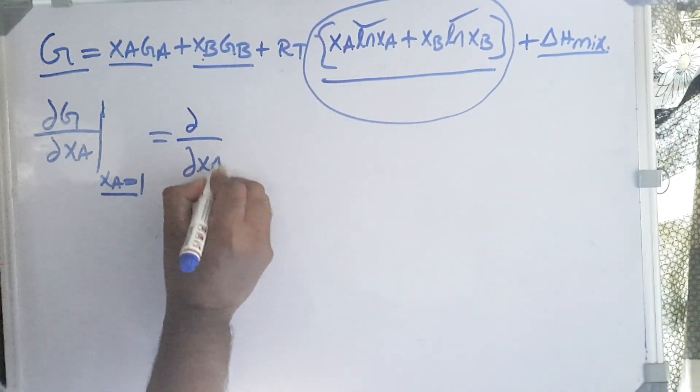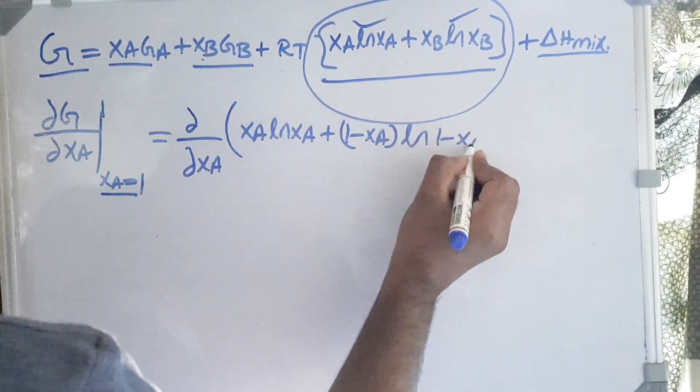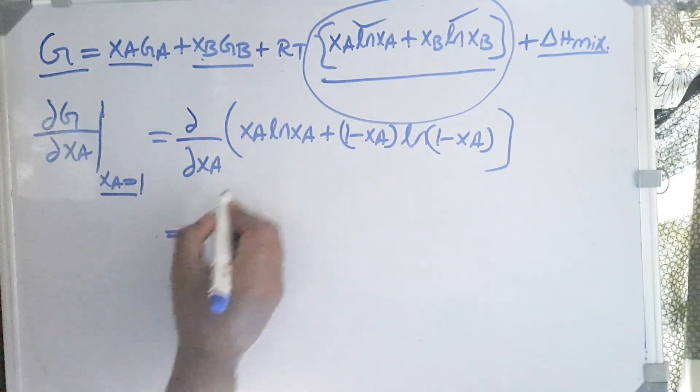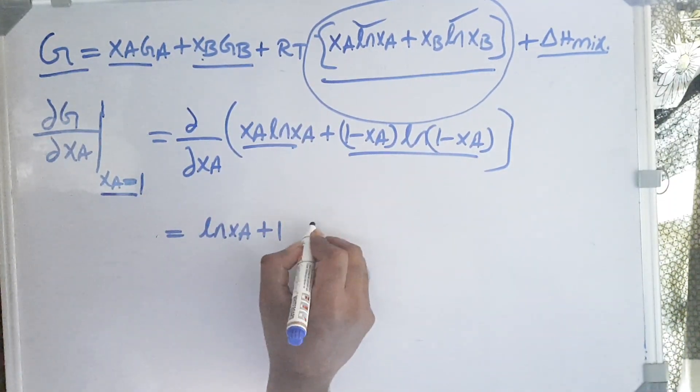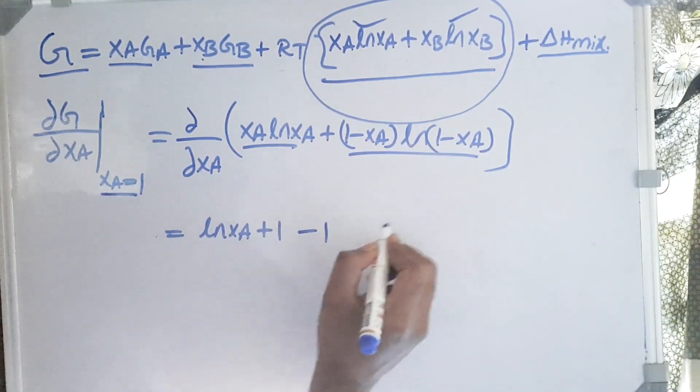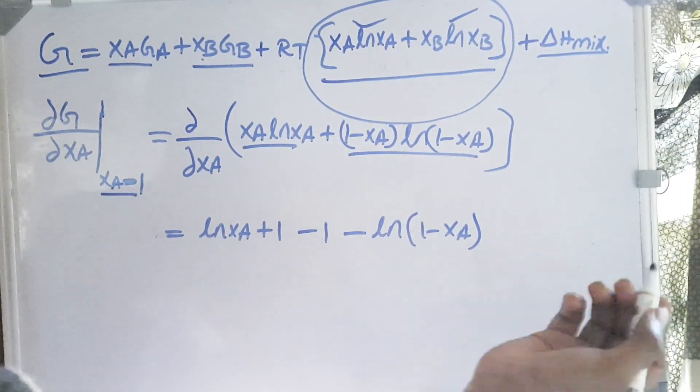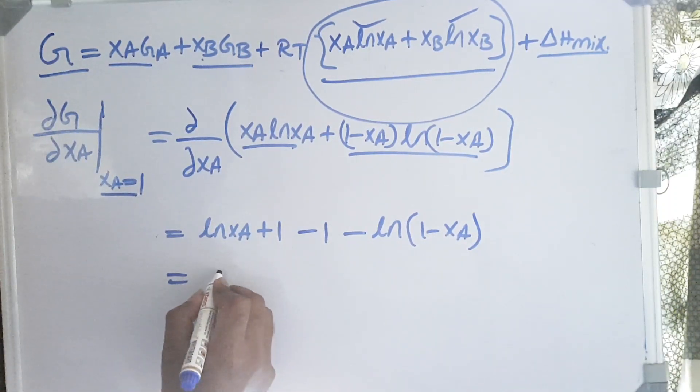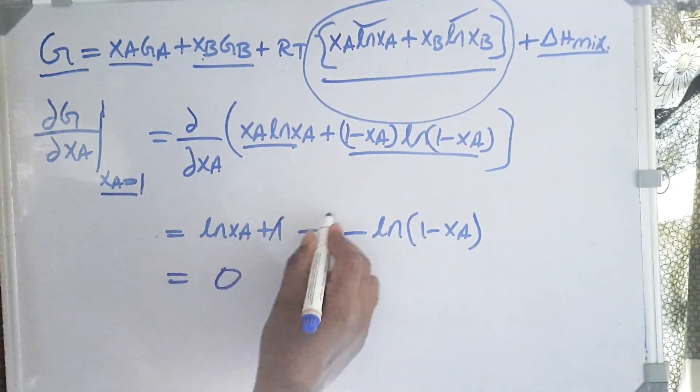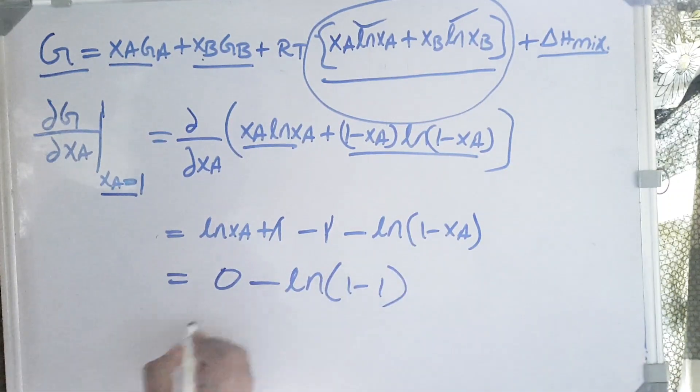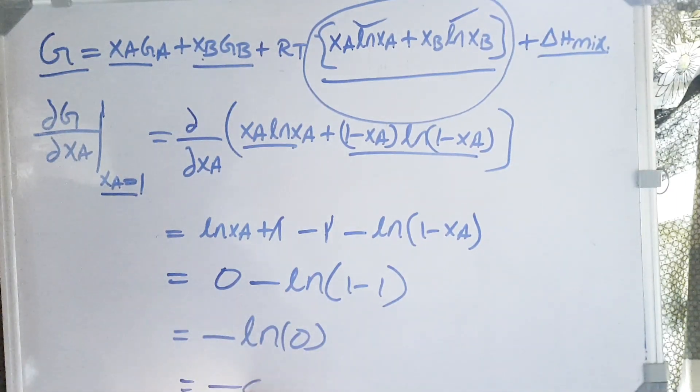Let us differentiate only this term and see what happens and substitute XA equals 1. So d/dXA of [XA ln XA + (1-XA) ln(1-XA)] gives us ln XA + 1 + (this times -1) - ln(1-XA). So this is what we get. Let's substitute XA equals 1. This is ln 1, which is 0, this gets cancelled, minus ln(1-1). This value is minus infinity.